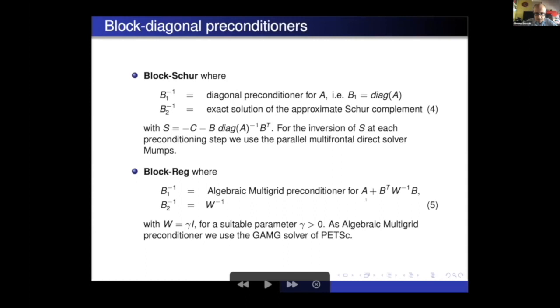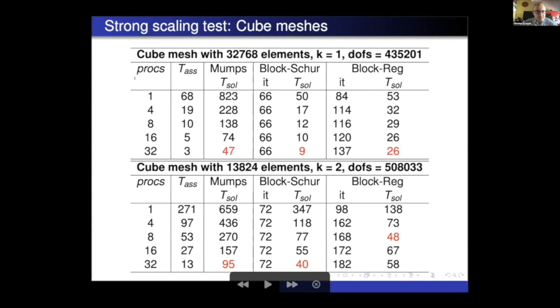As algebraic multigrid, for the first block, we use the GAMG, so the algebraic multigrid preconditioner provided by the PETSc library. So the runs are all done in parallel on a Linux cluster. The code is a C++ code, developed by Franco Dasi, and the parallelization is based on this library PETSc, based on the standard MPI.